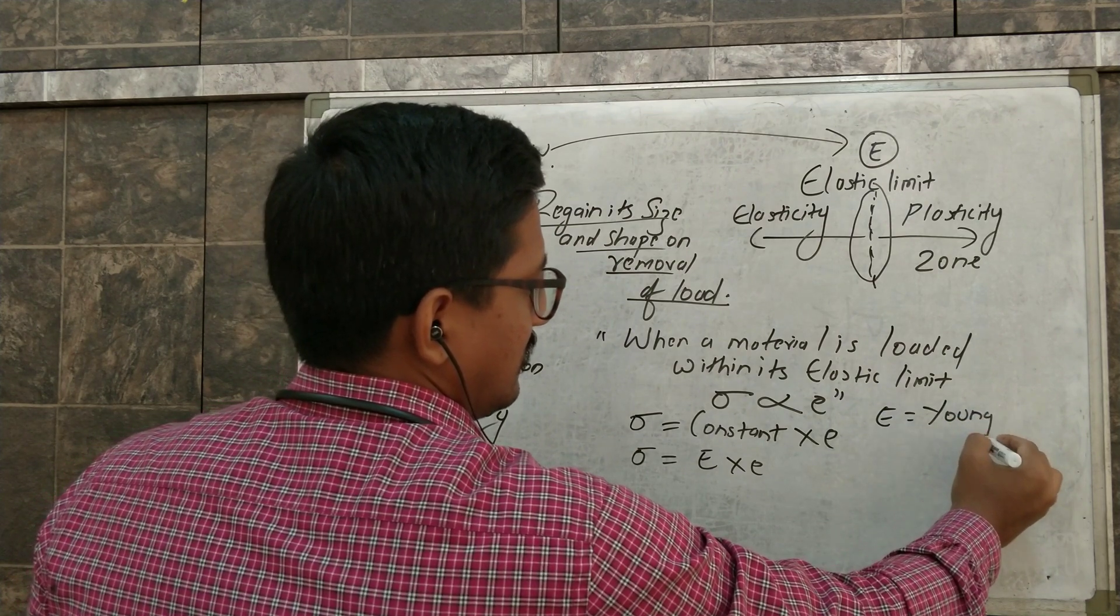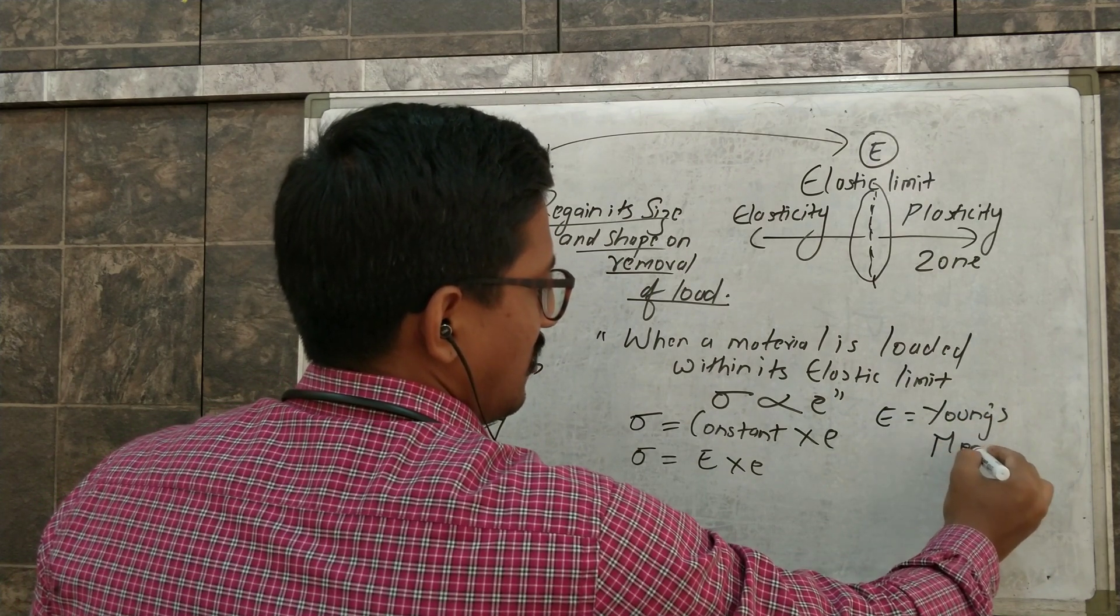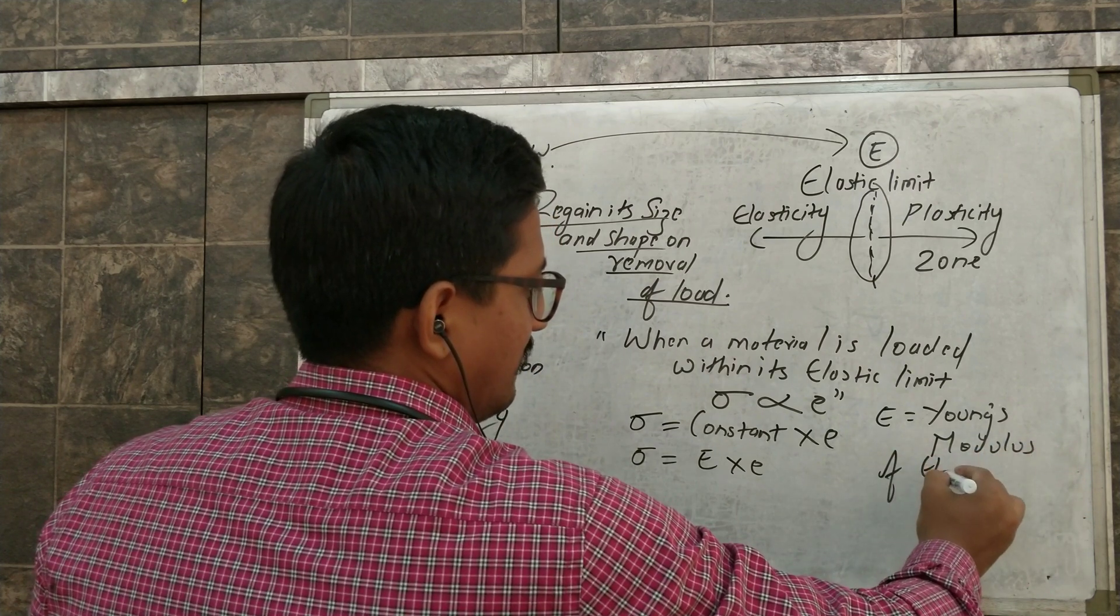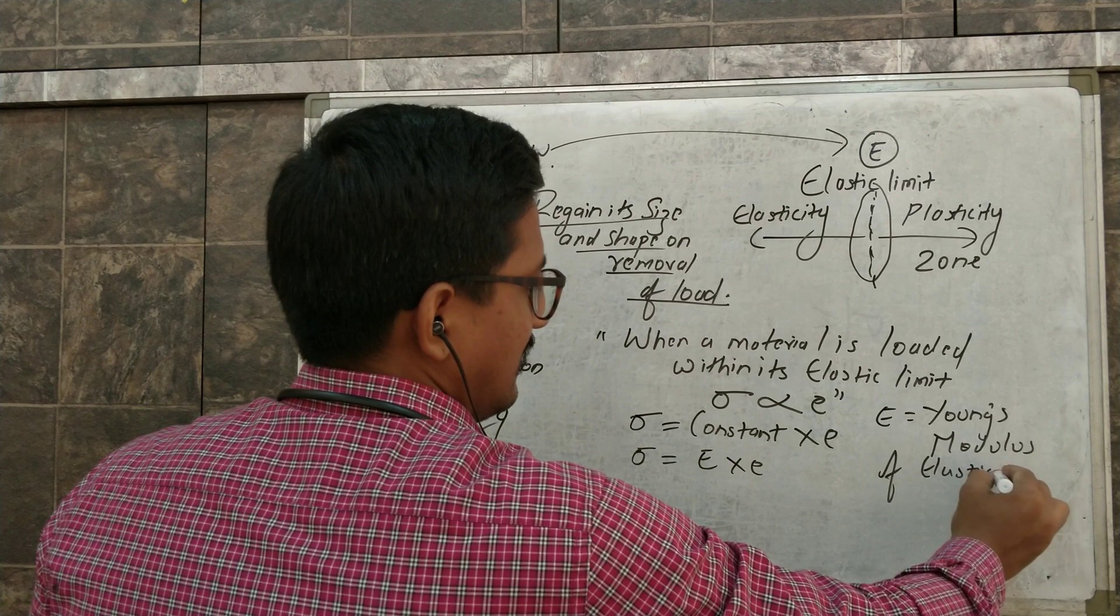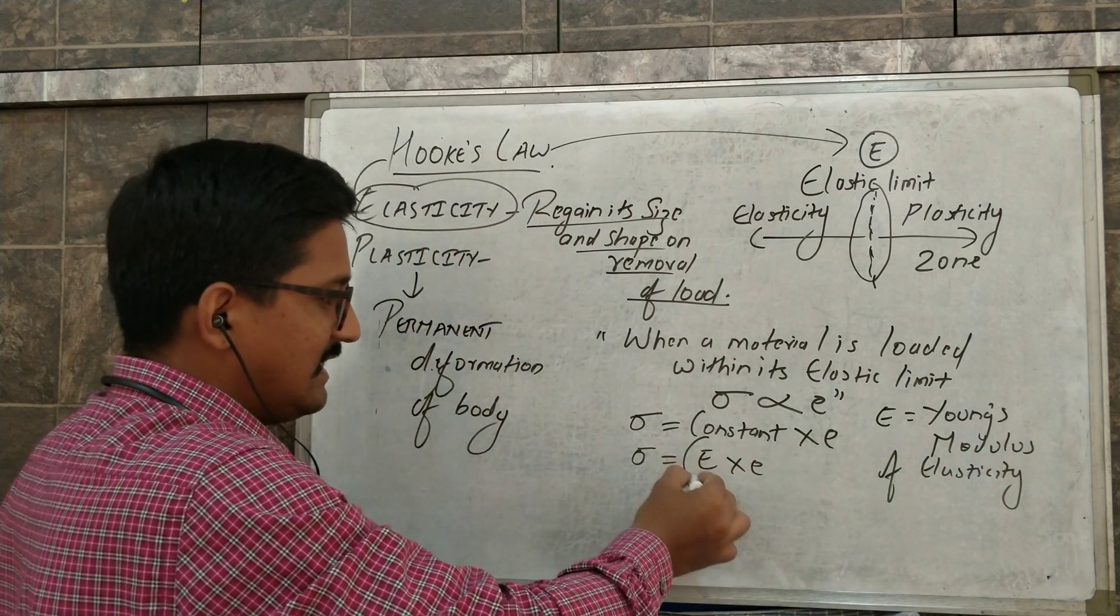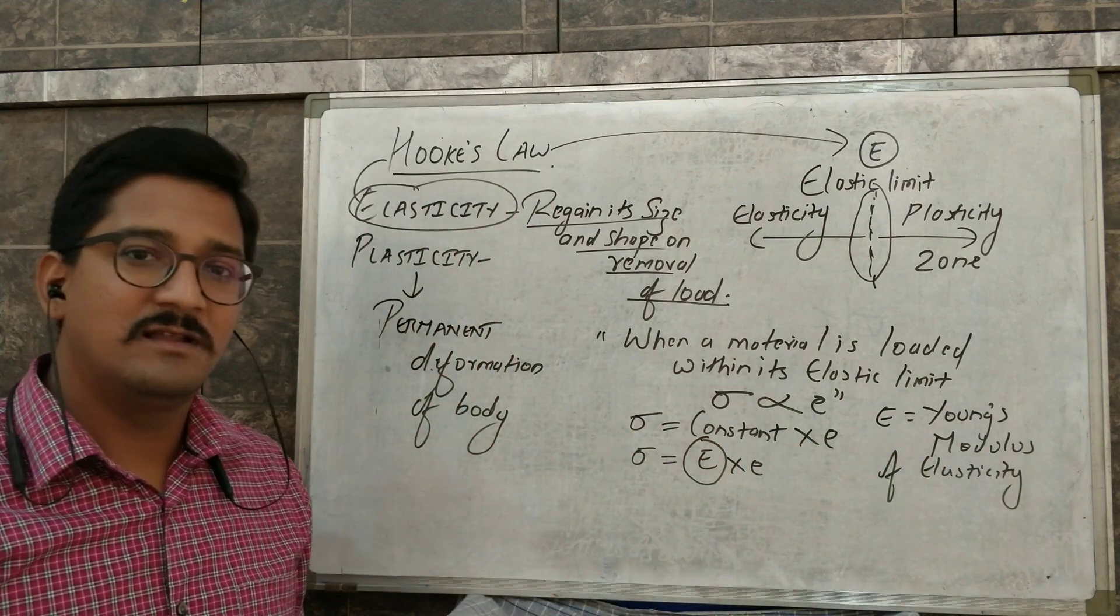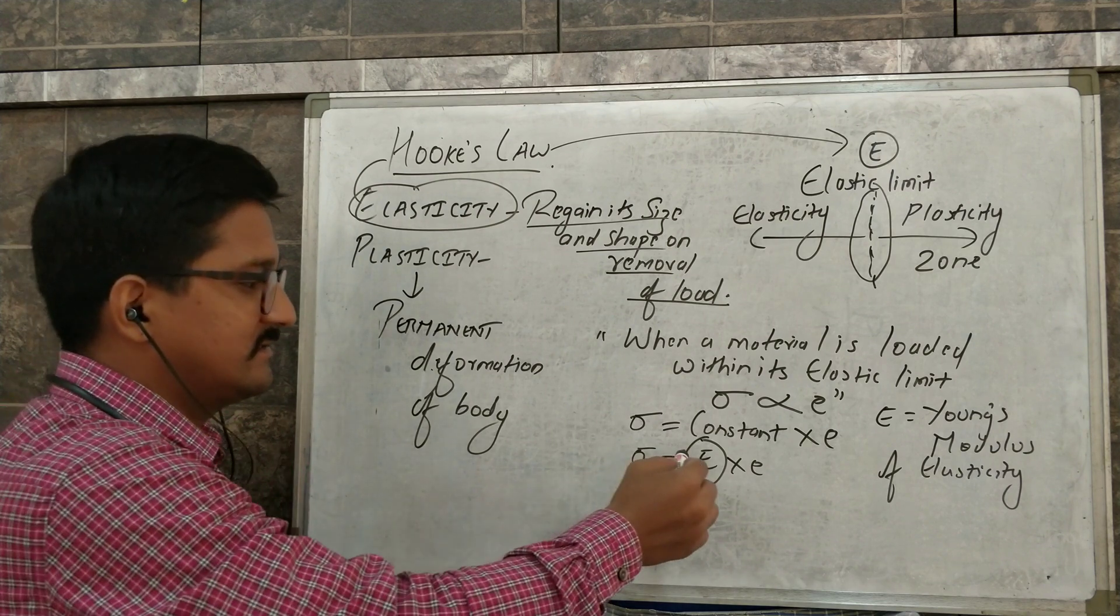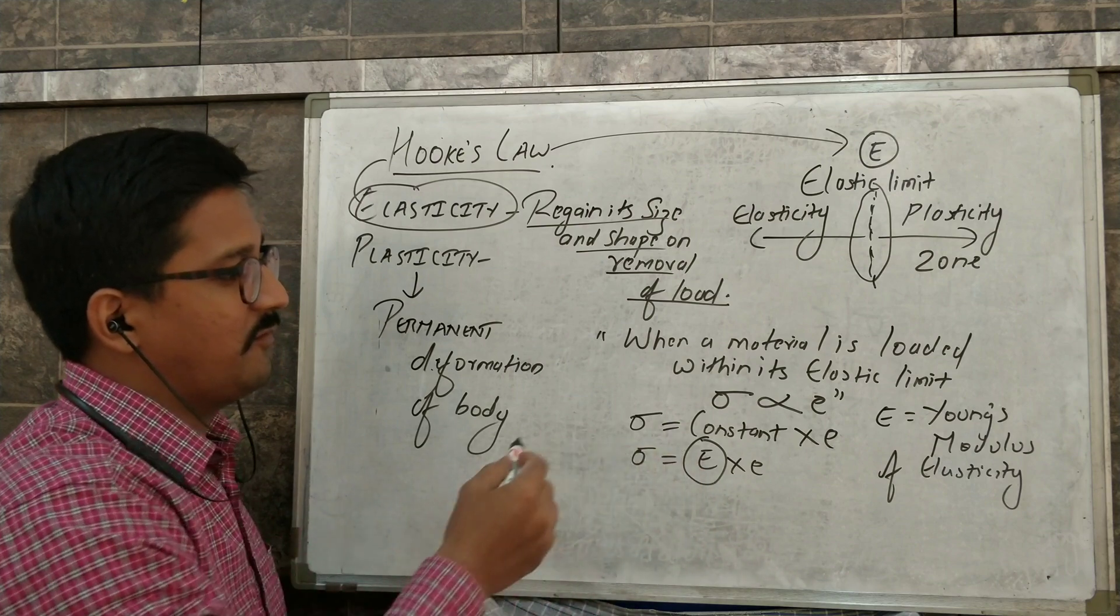Capital E is Young's modulus of elasticity. So this E is nothing but a parameter of stiffness. It shows the stiffness of a body.